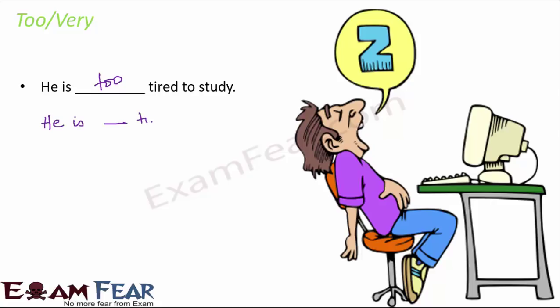And normally in sentences where we have something after the verb - like had it been a sentence where we would have just told he is dash tired, in that case we could have written very as well. In that case, he is very tired is also correct, he is too tired is also correct. But whenever you have this additional part after it - he is too tired to study, the box is too heavy to carry, the market is too far to go - wherever you have some additional thing even after the verb, the chances are high that it has to be too rather than very.